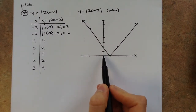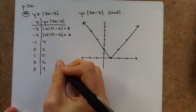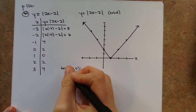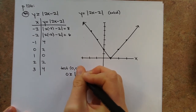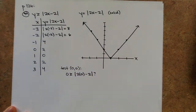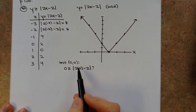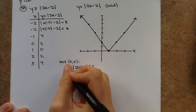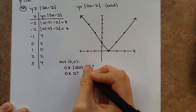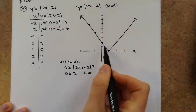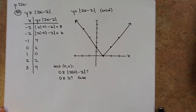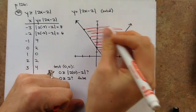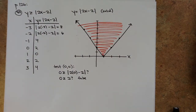Test the point (0, 0): is 0 ≥ |2(0) minus 2|? That simplifies to 0 ≥ 2, which is false. So shade the region not containing (0, 0). For absolute value inequalities, that means shading either inside or outside the V shape — here, shade everything inside the V.